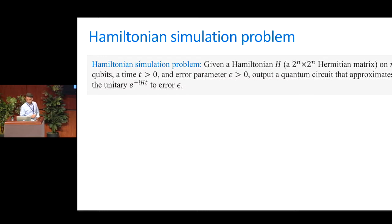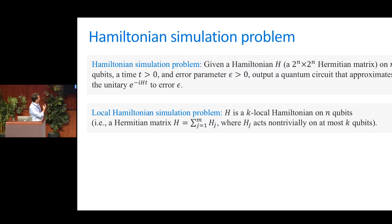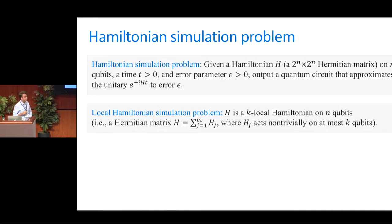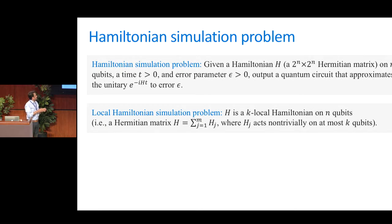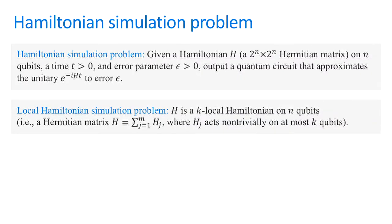A special case that's interesting for applications is the local Hamiltonian simulation problem. The Hamiltonian is k-local, meaning you can write the matrix H as a sum of matrices H_j, and each H_j only acts on k qubits at a time. Remember this Hamiltonian is on n qubits — n is large — and you want to think of k as a constant, like three. So it's a sum of terms, and each of those terms only acts on three qubits at a time. This captures a very special class of Hamiltonians that actually come up in practice.